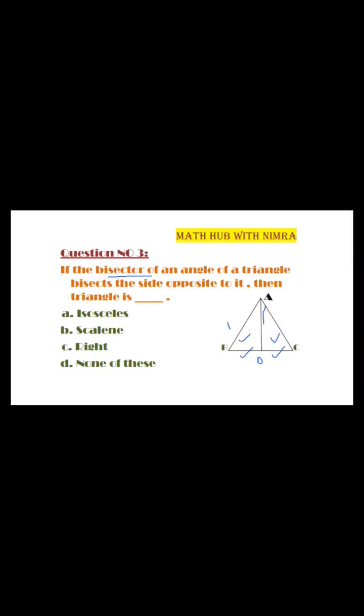Side AB is congruent to side AC. Now we are trying to choose the right option. The first option is isosceles triangle. In a triangle there are three sides. In an isosceles triangle, the length of two sides are equal.